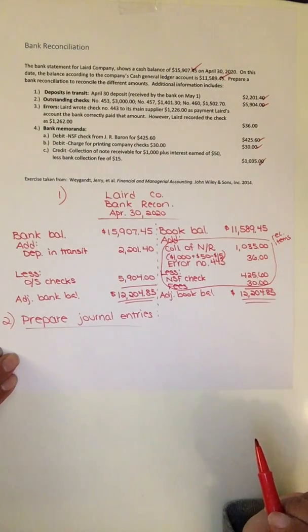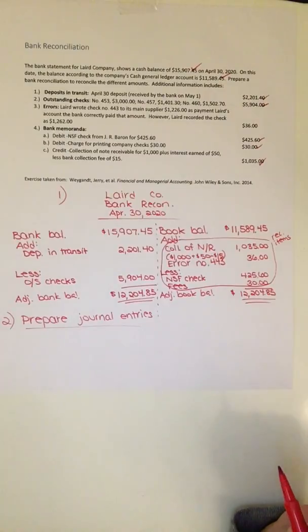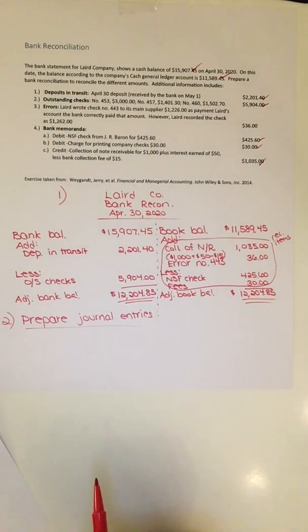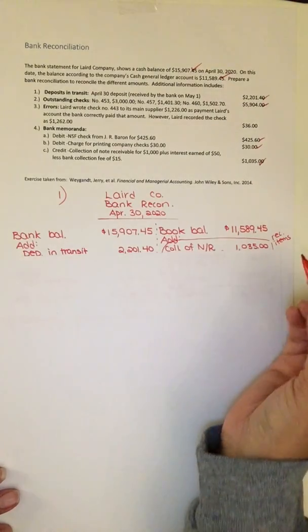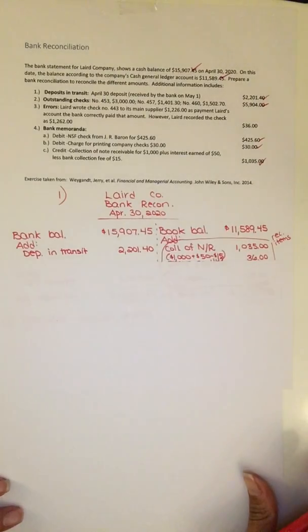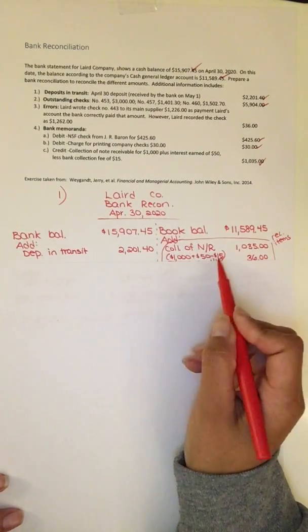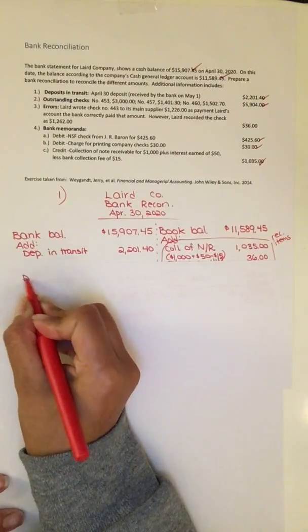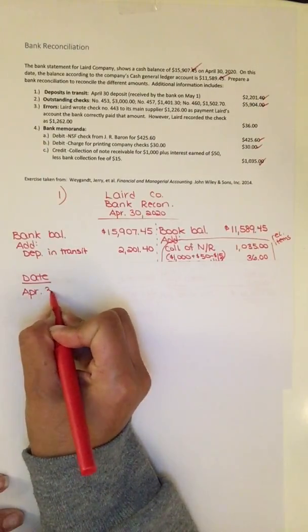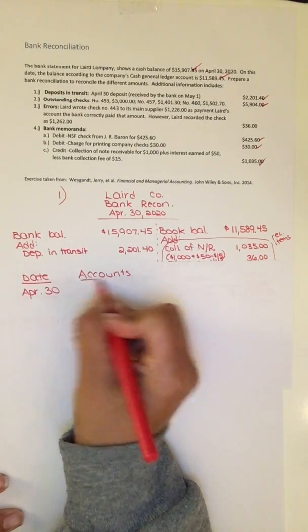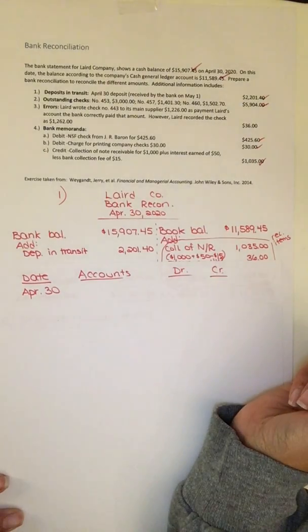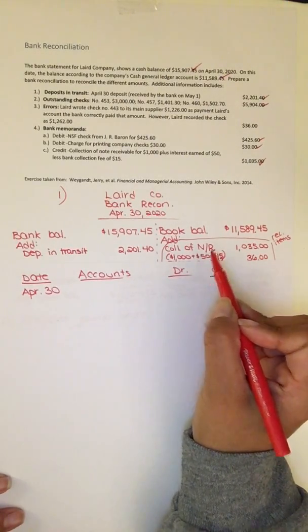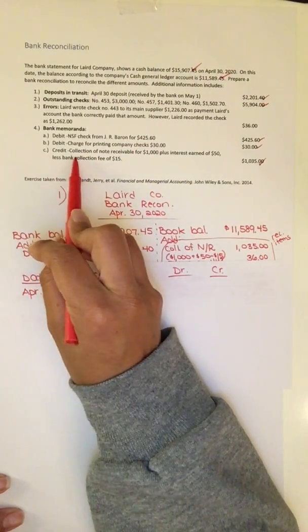It looks like we are going to have four journal entries. I'm going to grab an extra piece of paper to prepare the journal entries using the data from the bank reconciliation. So the first journal entry will be for the collection of this note receivable. We're going to need all the amounts, which is why I separated them out in parentheses. All these journal entries will have a date of April 30th, with accounts and debit/credit columns.